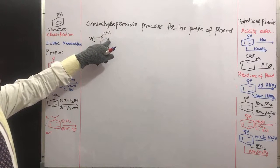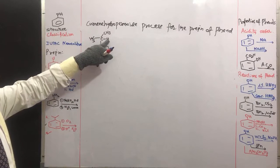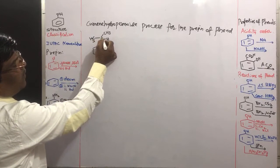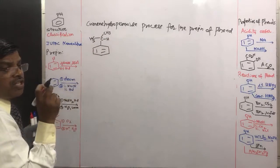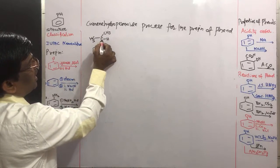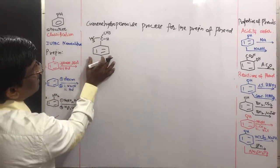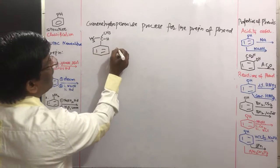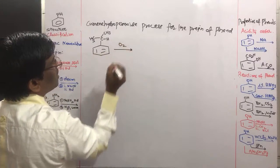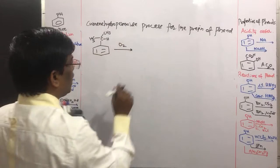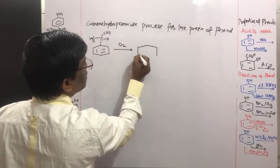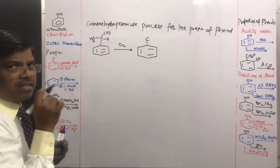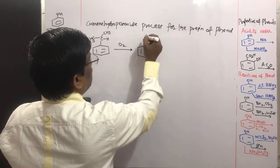Isopropyl benzene has a highly labile hydrogen. Upon losing this hydrogen, the carbon is stabilized because of its tertiary nature — it forms a stable tertiary carbocation or tertiary free radical. At the same time it is benzylic, which is why it easily undergoes aerial oxidation with oxygen.